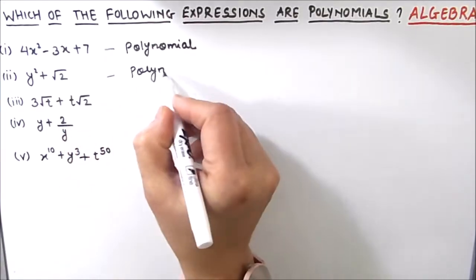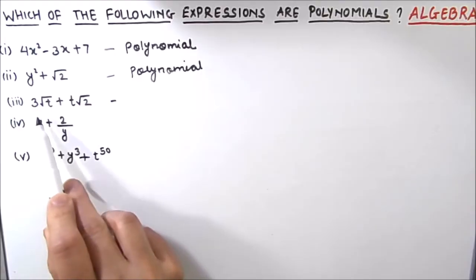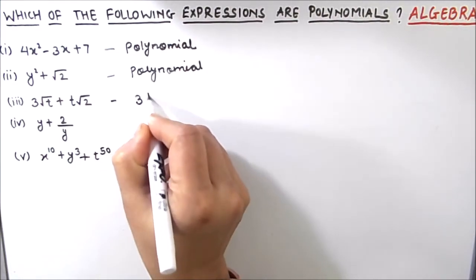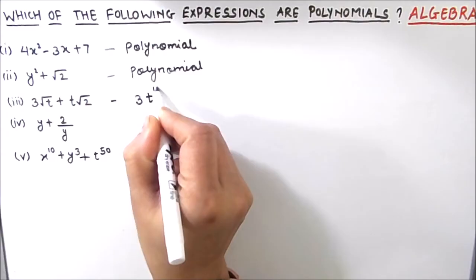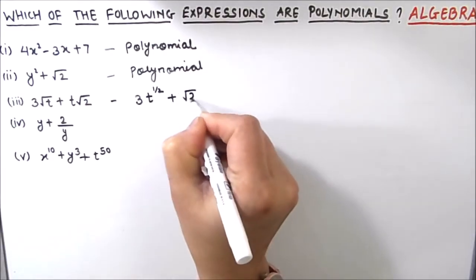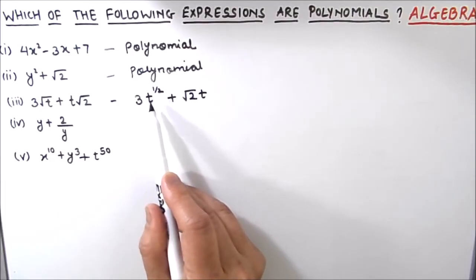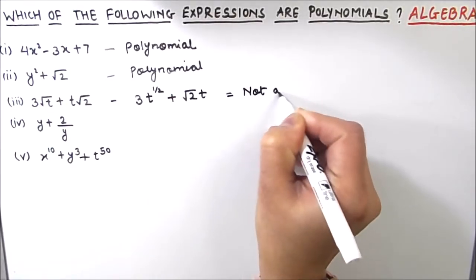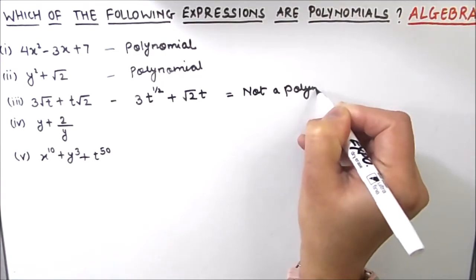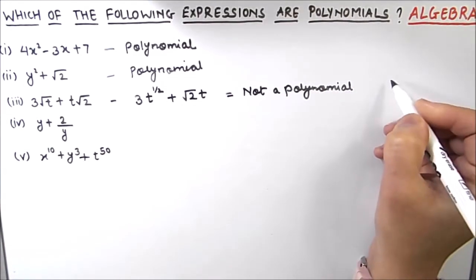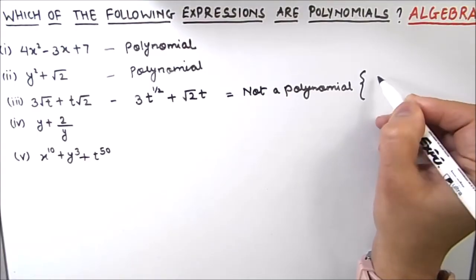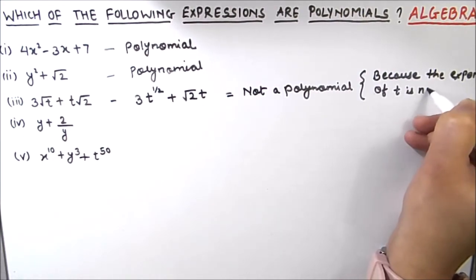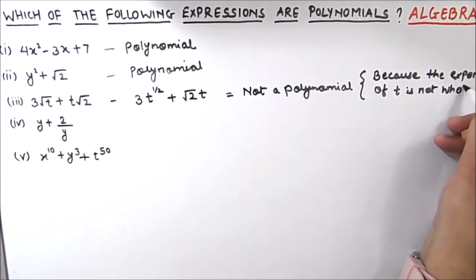We can have radical numbers in a polynomial. The third expression is 3 square root t plus root 2 times t. If we write this in terms of powers of the variable, it becomes 3t to the power one-half plus root 2 times t. The exponent of the variable t is not a whole number, so this is not a polynomial. For an expression to be a polynomial, the powers of the variable should be whole numbers.